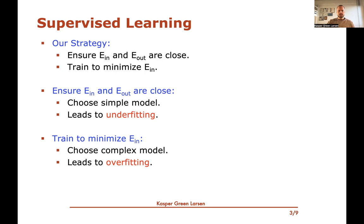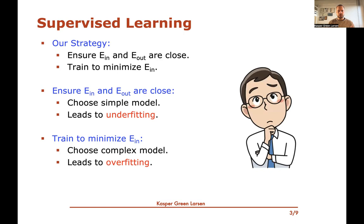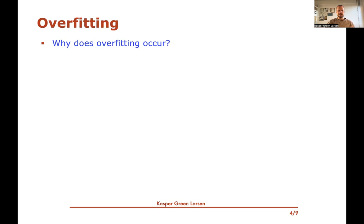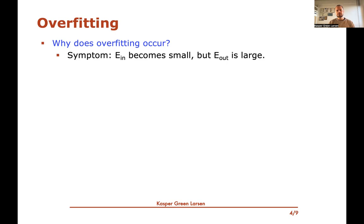So the issue is, of course, what should we do here? There seems to be a controversy — two conflicting directions to go. Should we choose simple models or complex models? Because we have these two goals at the same time: wanting the in-sample error and out-sample error to be close, and wanting the in-sample error to be small. The symptom of overfitting is that the in-sample error becomes small while the out-sample error becomes large or remains large. So we've found a model that looks really great on the training data, but actually isn't if you give it new data.